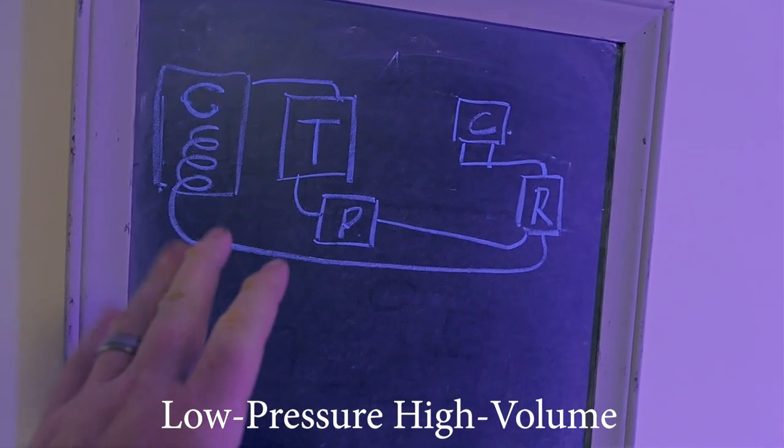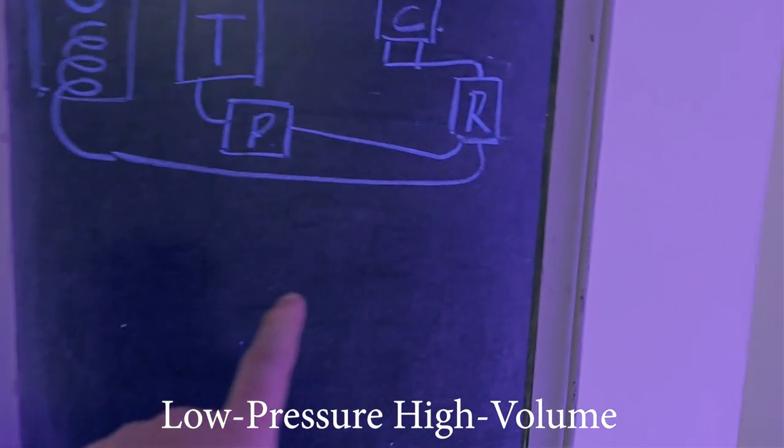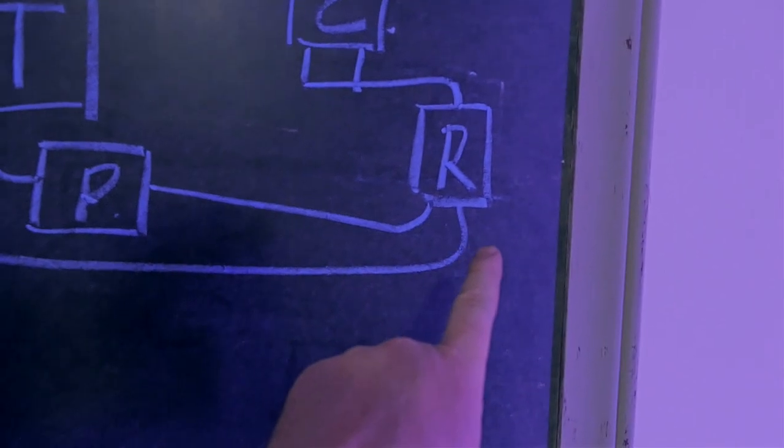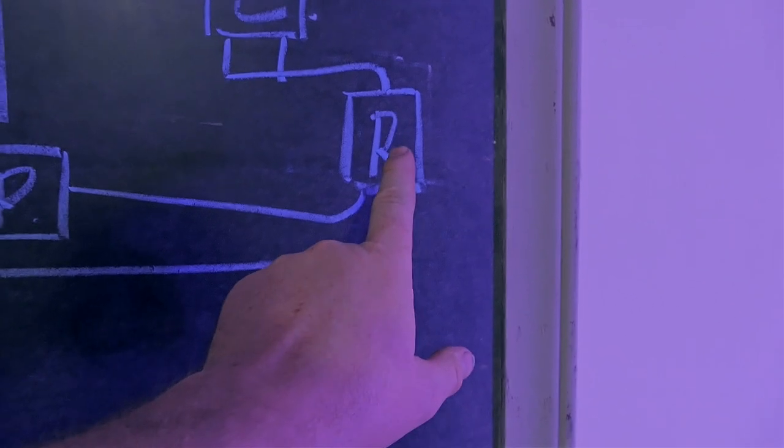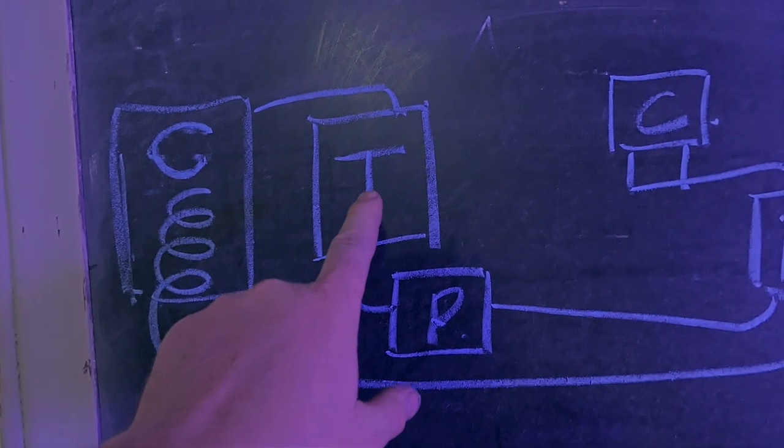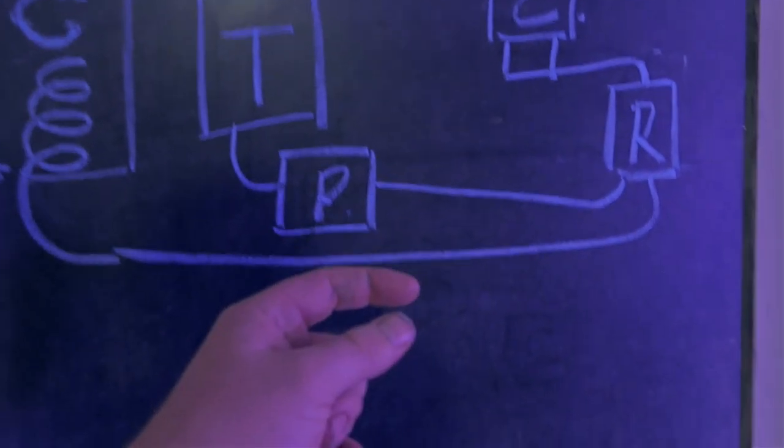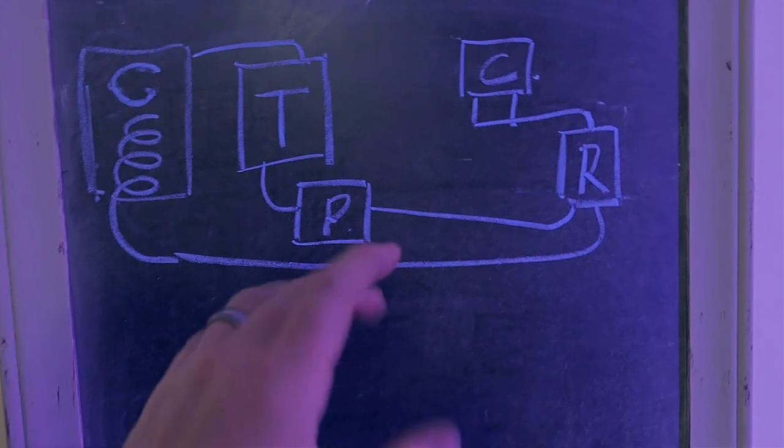So carburetor setups are not about pressure. They're about volume of flow. And if you can't alleviate the flow going into the regulator to the carb, back to the tank fast enough, it's going to build up pressure, and you're not going to have adjustability in that screw. So this is what happened.